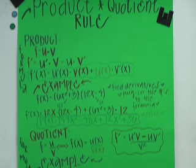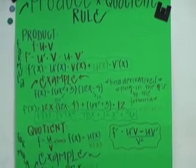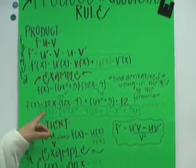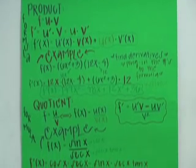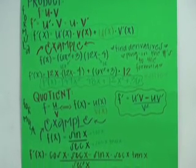Next, you have to plug in your numbers into the formula. And it would be 12x times 12x minus 4 plus 6x squared plus 3 times 12. And after that, you just solve.